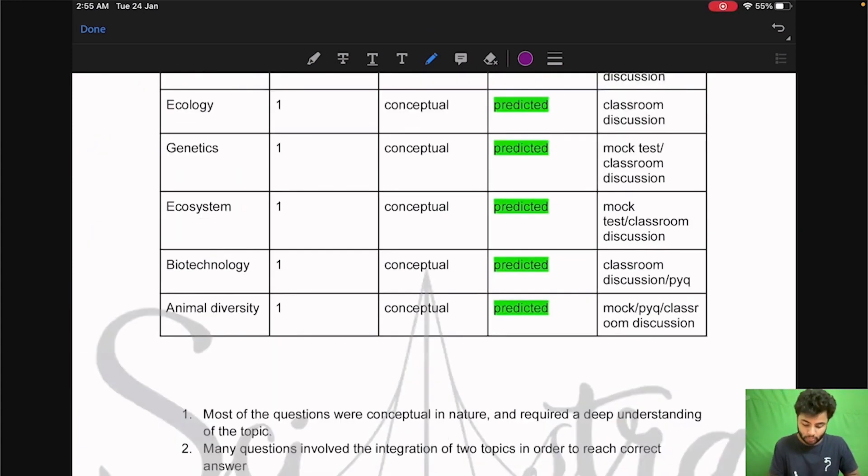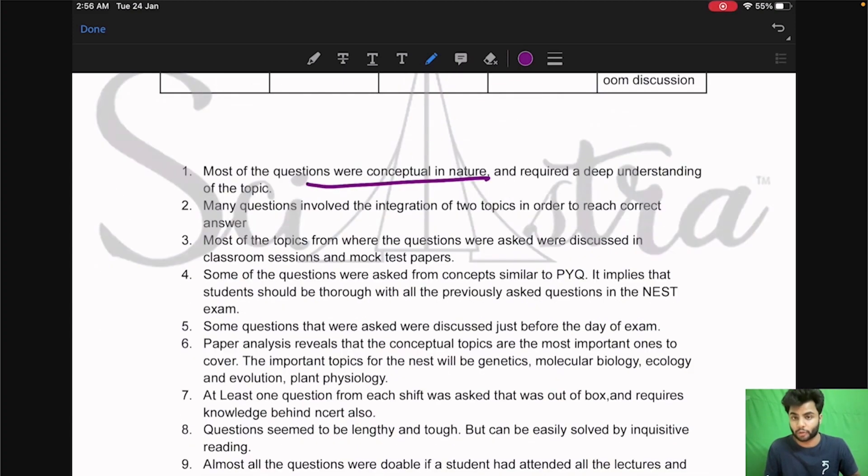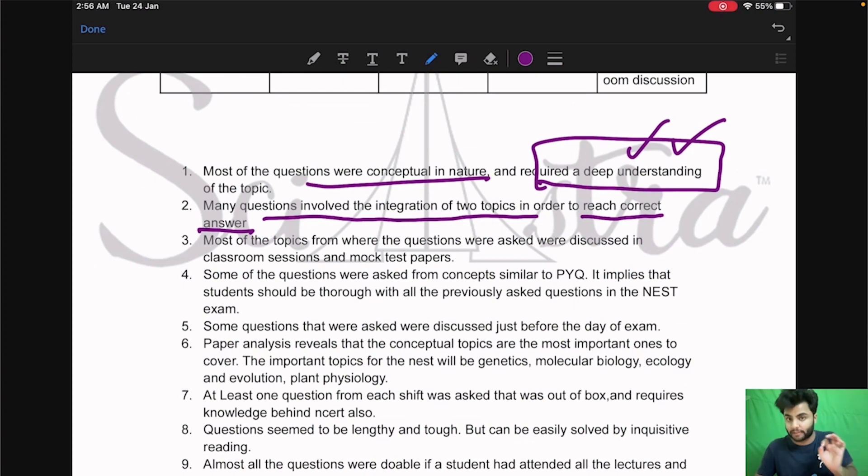Now coming to the conclusion part. So most of the questions were conceptually in nature. First of all you see and they require a deep understanding of the topic. Then many questions involve integration of two topics in order to reach a correct answer. What do you understand from here? So basically the NEST examination is JEE Advanced level or KVPY level you can see because in JEE Advanced there is no biology section. So just like KVPY in any of the section physics chemistry math bio they integrate or mix two three concept and then make a question or the answer out of it.